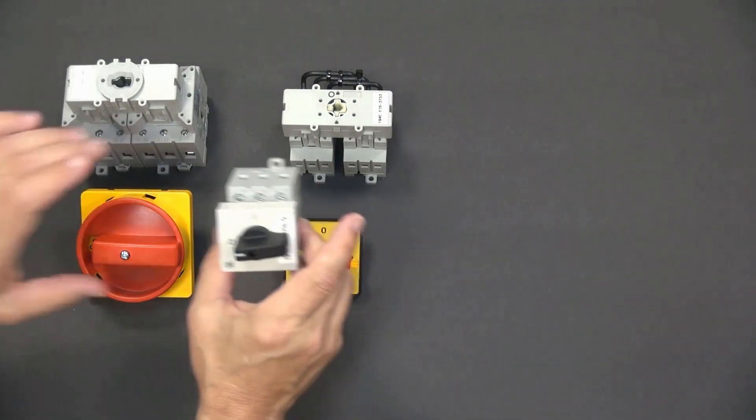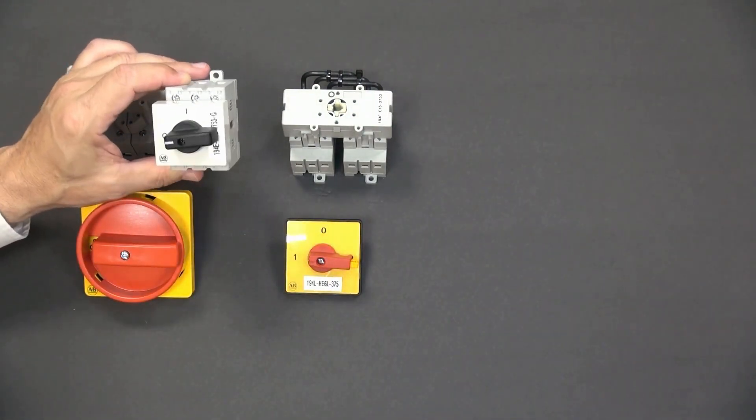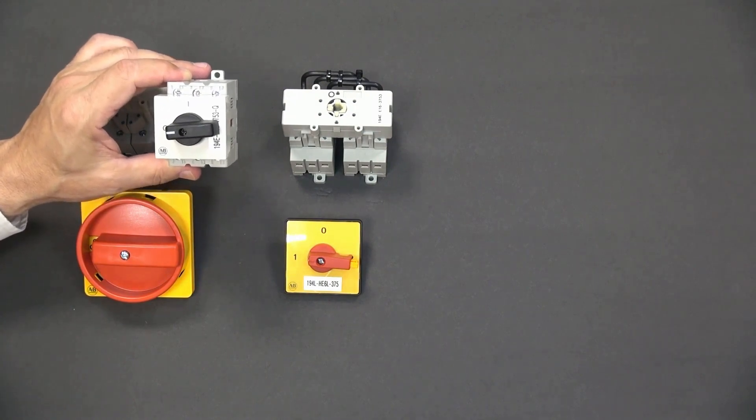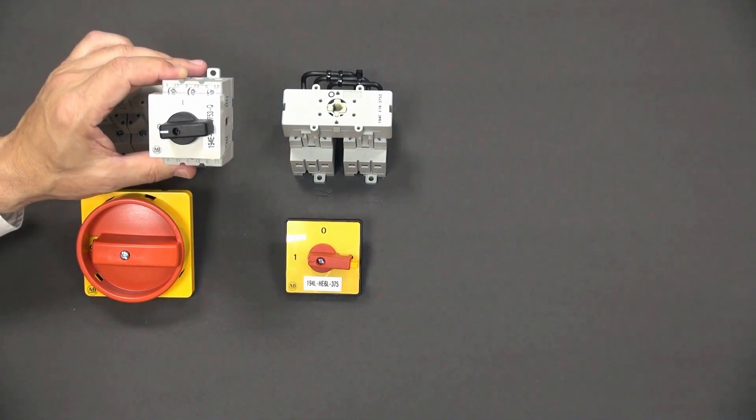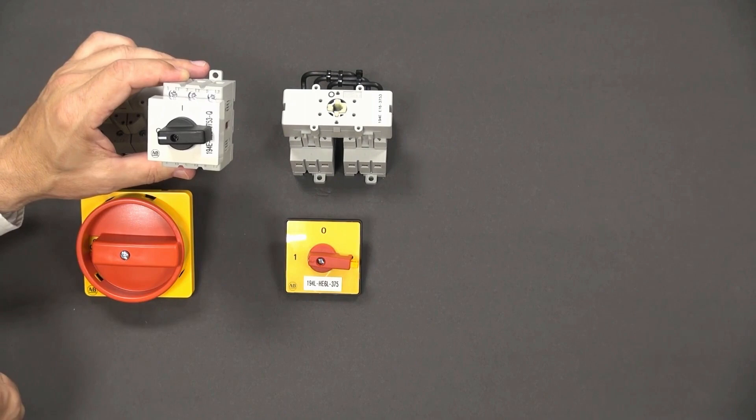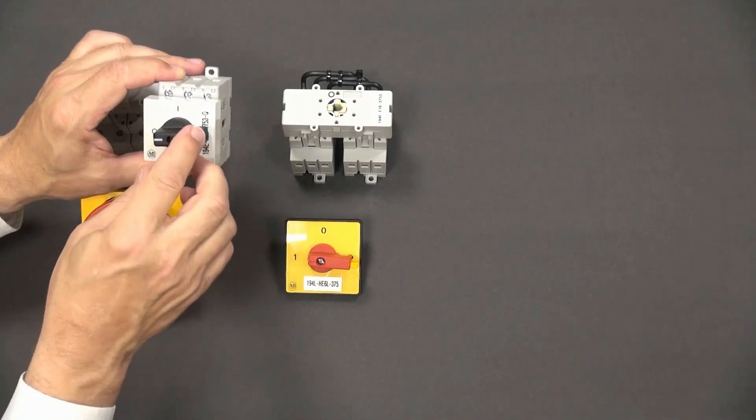This little switch is a 16 amp panel mounted base switch with a door or face mounted handle. This little switch has application inside the control panel and is typically fitted with terminal covers. Many industrial installations require a maintained source of control power and are not connected through the three-phase disconnect.